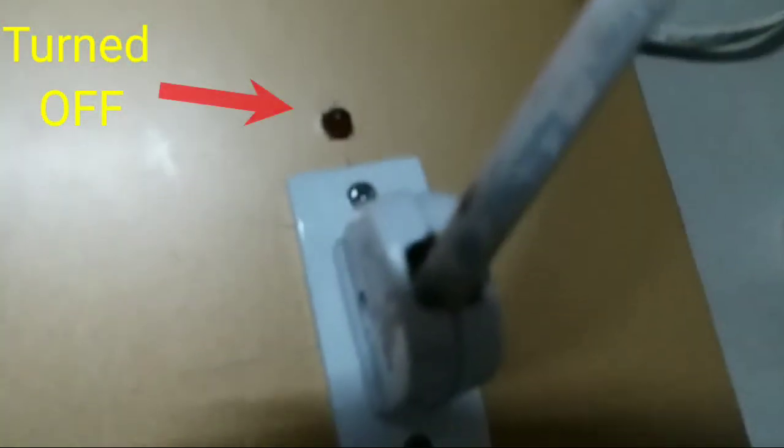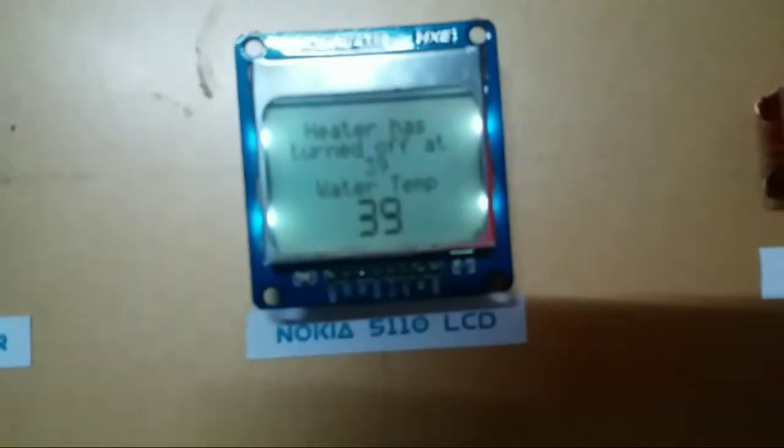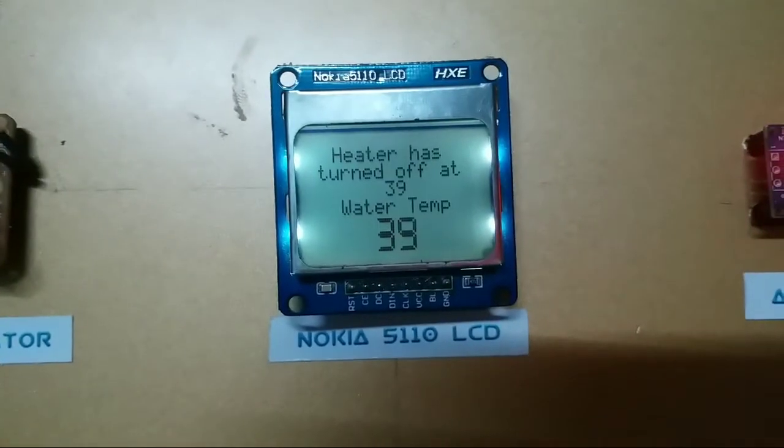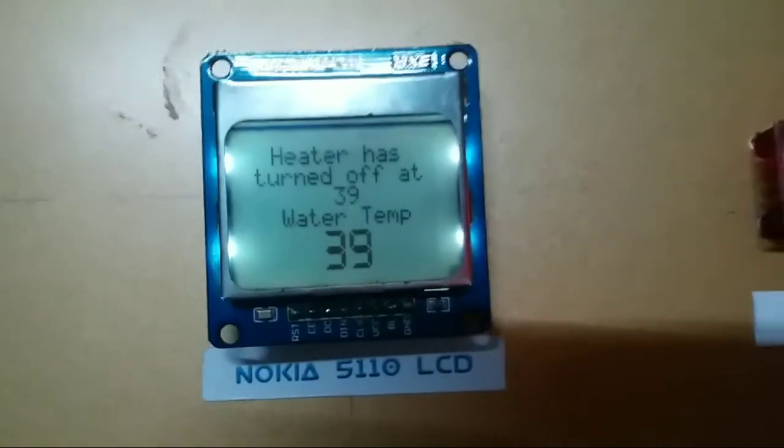Heater has turned off successfully at 39 degree C. It means our system is working very fine. We can also observe heater status on the screen.